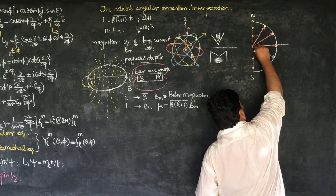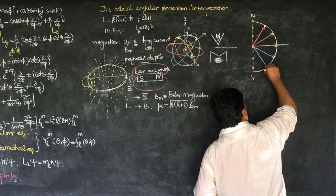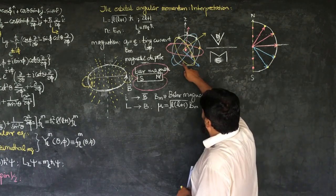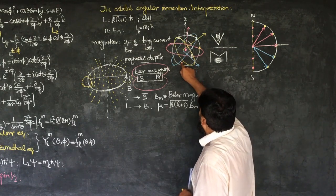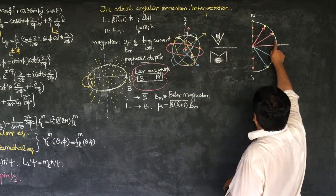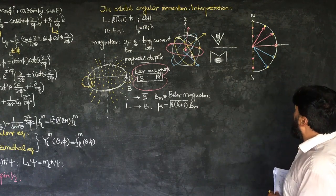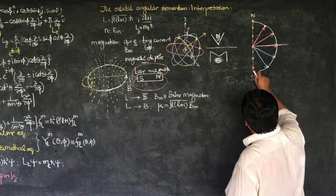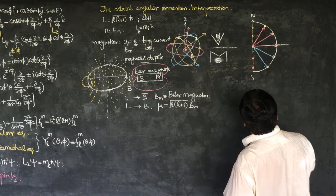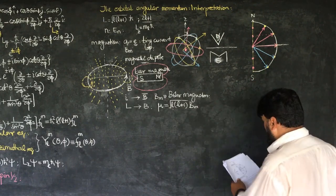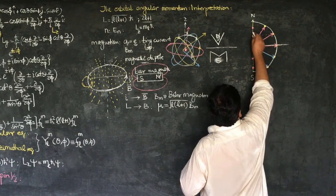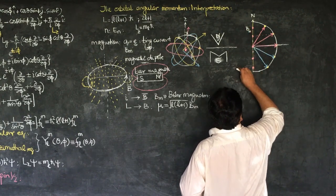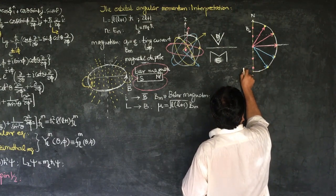Our orbitals will actually align in this magnetic field in these distinct orientations. This is the confirmation that there are quantized orbital angular momenta. The Bohr magneton value corresponds to the specific spot positions observed on the detector.